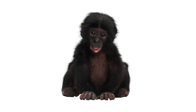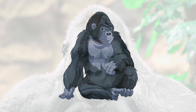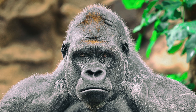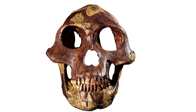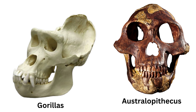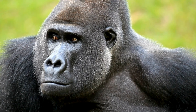Chimpanzees, bonobos and gorillas have distinct facial characteristics such as a bony arch above the eyes that protrudes prominently, separating the facial mask from the brain case. In contrast, early hominins like Australopithecus show weaker differentiation between the supraorbital structures above the eyes and the brain case. These differences may be related to both social display mechanisms and biomechanical performance, with the latter being more important.